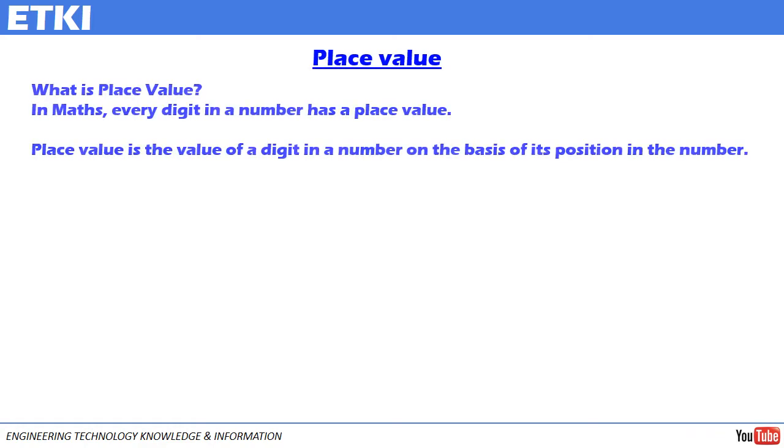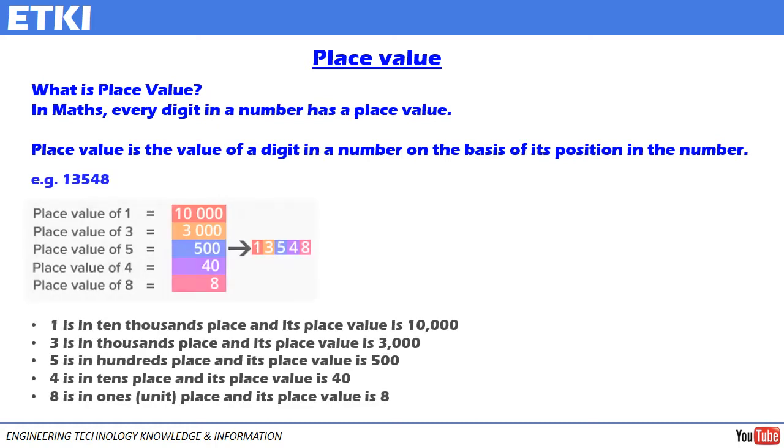Let us start our study by understanding the term place value. Place value is the value of a digit in a number on the basis of its position in the number. To understand this, let us take an example. I have taken 13,548. The place value of 1 is 10,000, place value of 3 is 3,000, place value of 5 is 500, place value of 4 is 40, and place value of 8 is 8.